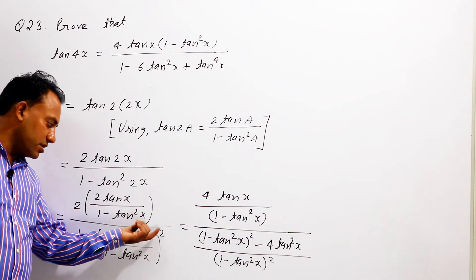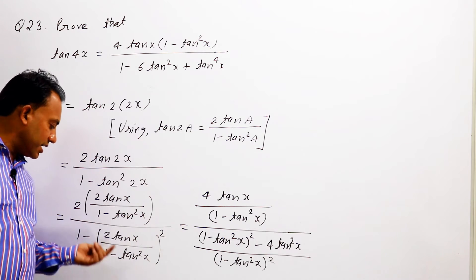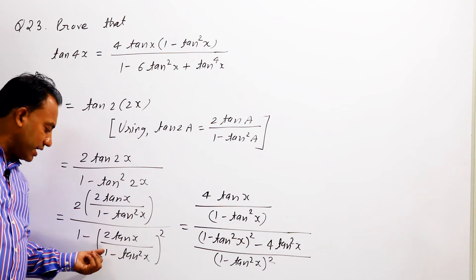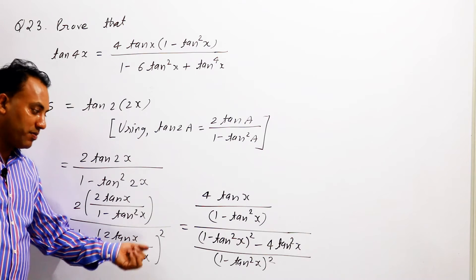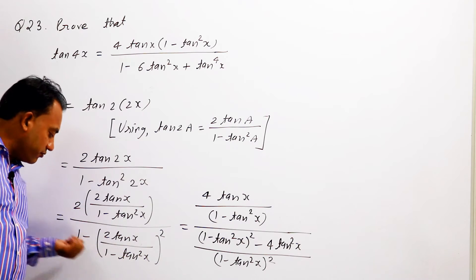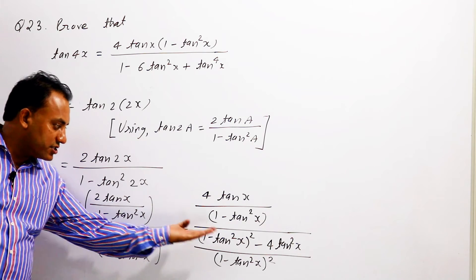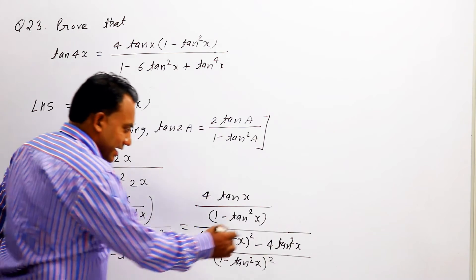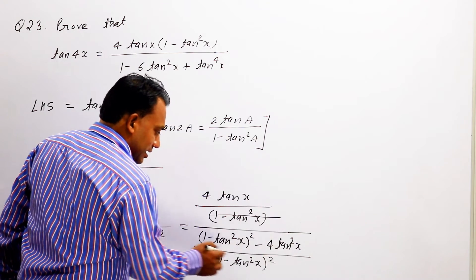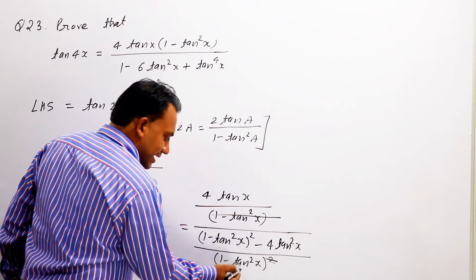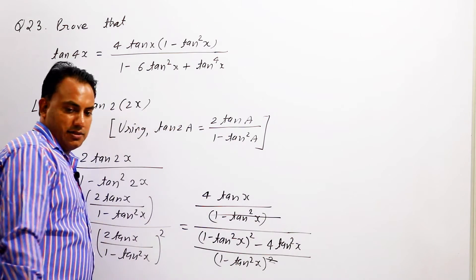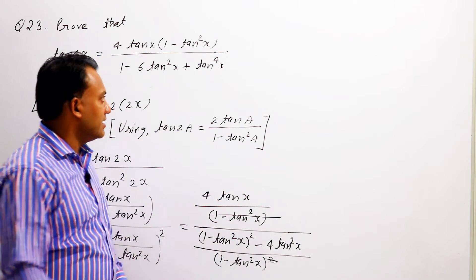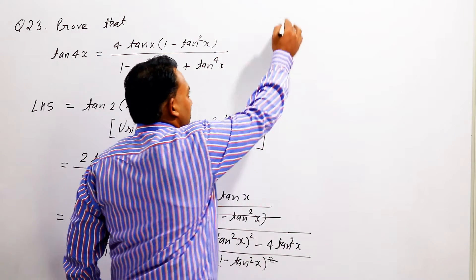अगर हम इसे separate करें बच्चों, इसकी power के साथ, तो यह जाएगा 4 tan² x और यह जाएगा 1 minus tan² x की whole power 2। तो इसमें 1 में multiply हो जाएगी और सब upon में आ जाएगा। इससे एक यह cancel हो जाएगा और वो इसके साथ आ जाएगा।